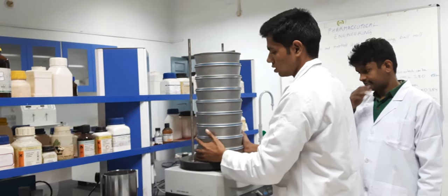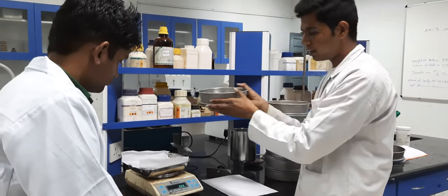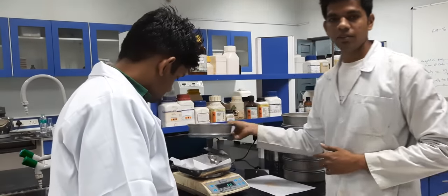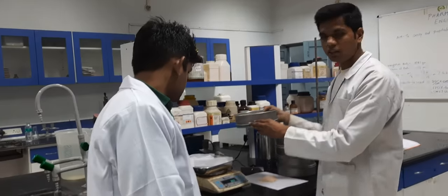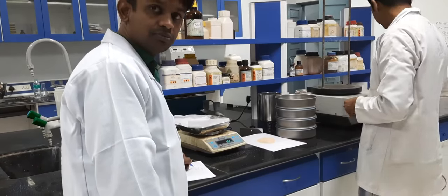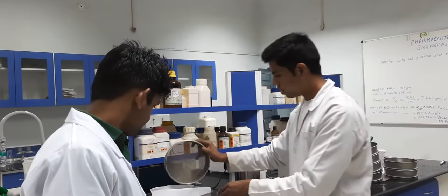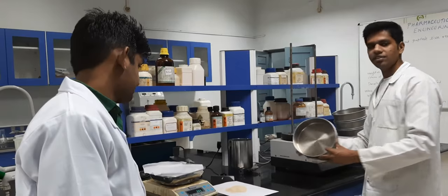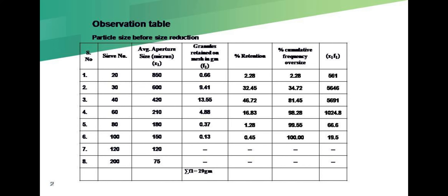Checking the sieves: sieve number 20: 2.2 grams. Sieve number 30: 2.24 grams. Sieve number 40: 8.5 grams. Sieve number 60: 20 grams. Sieve number 80: 1 gram. Sieve number 100: 0.2 grams. The pan is also empty. These are the size distribution results after milling.